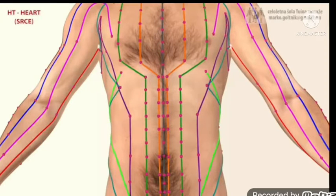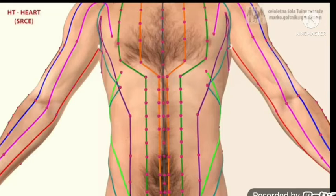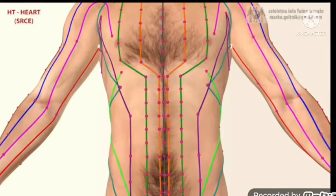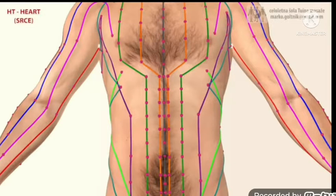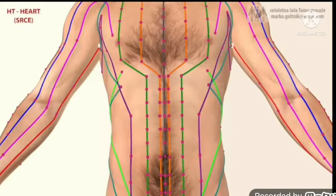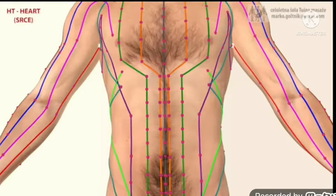Hi all, in the last video we covered the spleen meridian, which was a yin organ having 21 points that ended at the chest. Now we're going to see the heart meridian. The spleen meridian connects with the heart meridian, which goes up to our little fingertip.